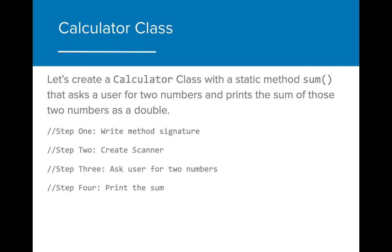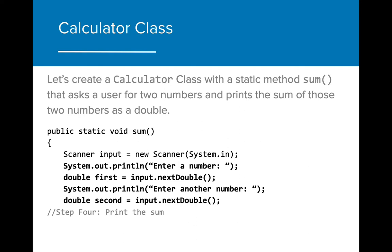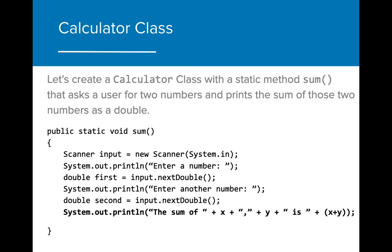Here are the steps written out for this method. First, we need to declare the method. We need to include the static keyword so that we can call the method without having to create a calculator object, and the keyword void because the method doesn't return anything. Next, we need to create a scanner to take user input. Using that scanner, we want to take two values from the user that we will eventually sum together. And finally, we can print out the results of that sum with a string that describes what two values are being added and the eventual result.